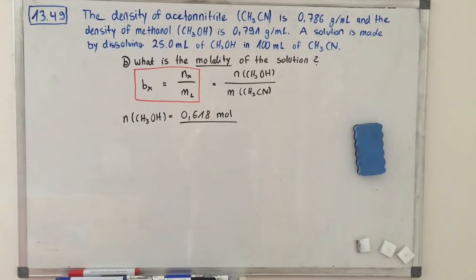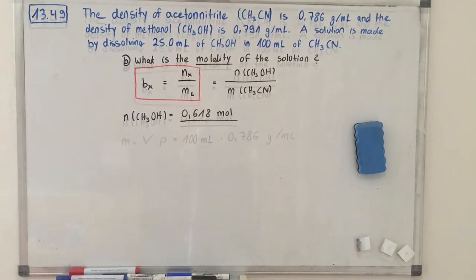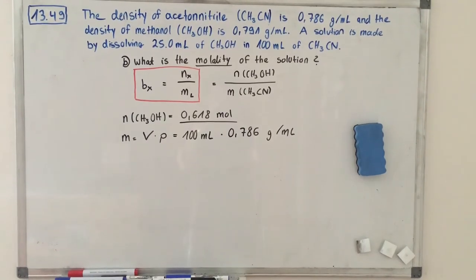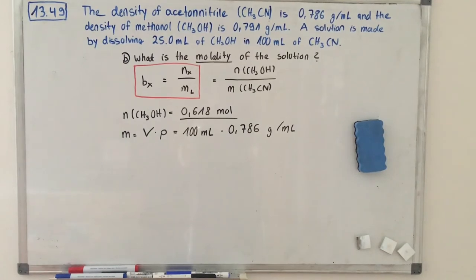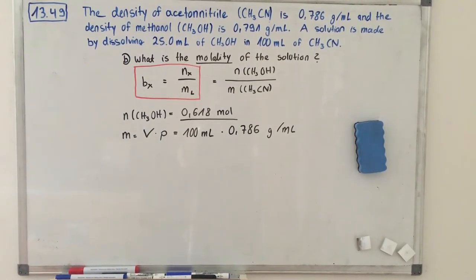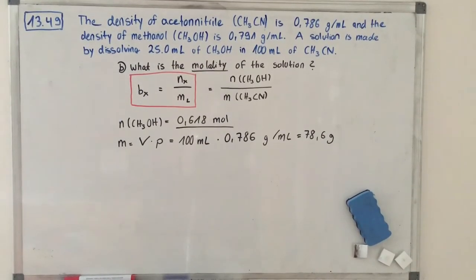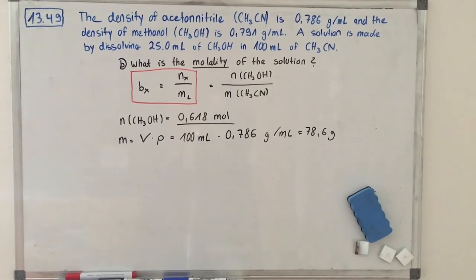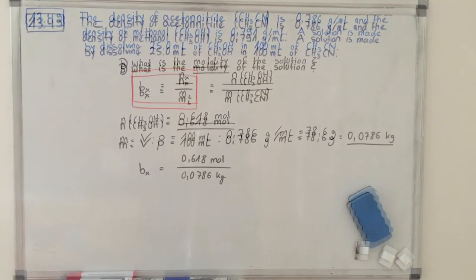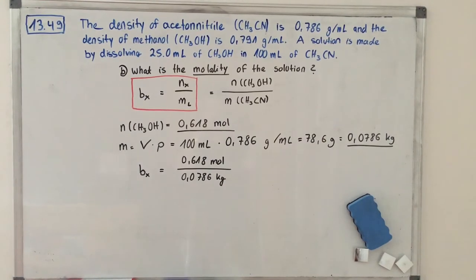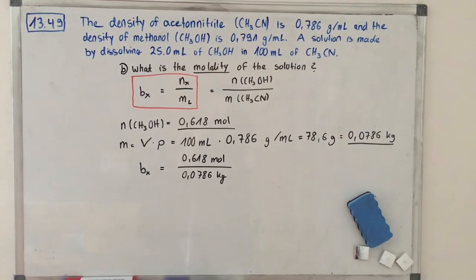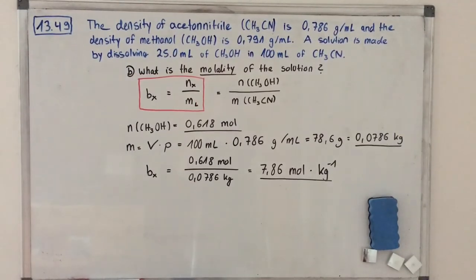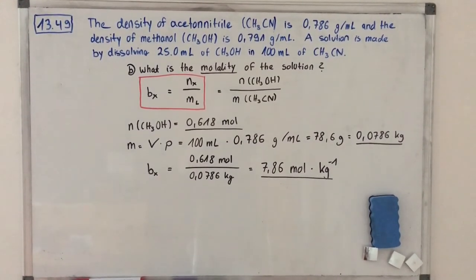The only remaining step is to calculate the mass of acetonitrile using volume multiplied by density: 100 mL times 0.786 g per mL equals 78.6 g. We must be careful with units — the mass of the solvent must be in kilograms, so that is 0.0786 kg. Using our molality formula: 0.618 mol divided by 0.0786 kg gives 7.86 mol per kg of acetonitrile.